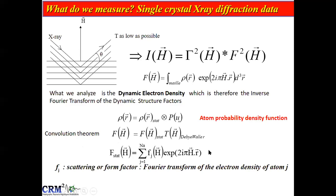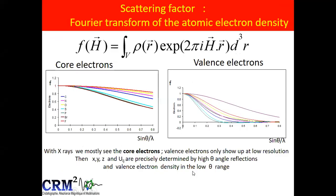It is the static structure factor that is very important, in which you see Fj, which is the atomic scattering form factor — a Fourier transform of the electron density of atom J. That is the curve of the scattering factor as a function of resolution. You see that mostly the core electrons are seen by X-ray, and the valence electrons are seen only at low resolution. Those are the electrons that I want to model.